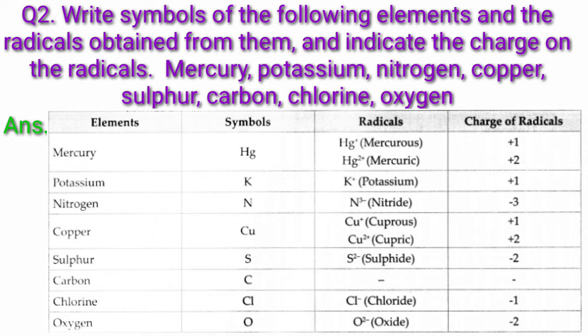Chlorine — symbol Cl, radicals Cl−, charge of radicals −1. Oxygen — symbol O, radicals O2−, charge of radicals −2.